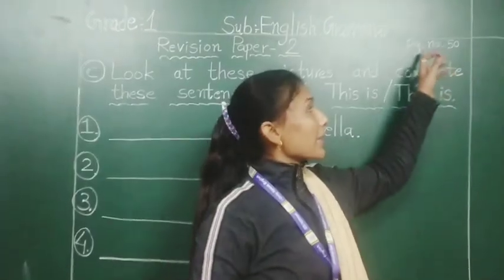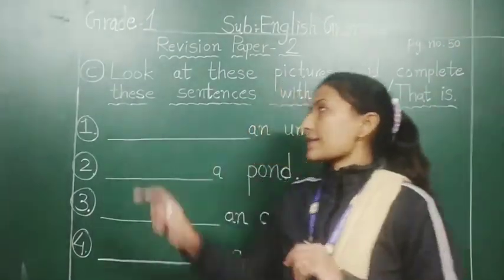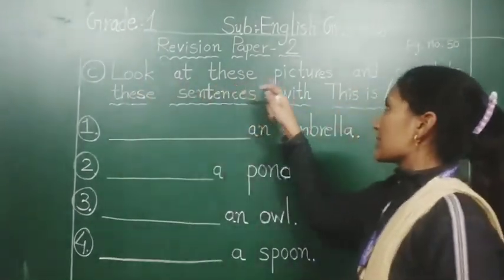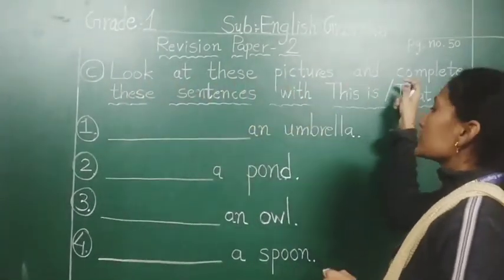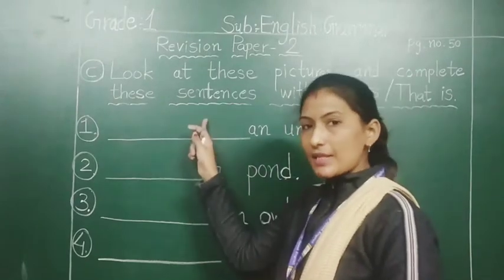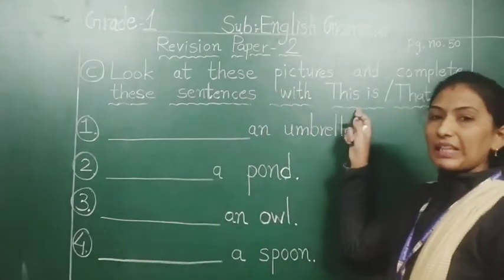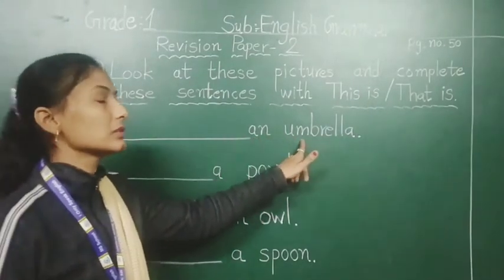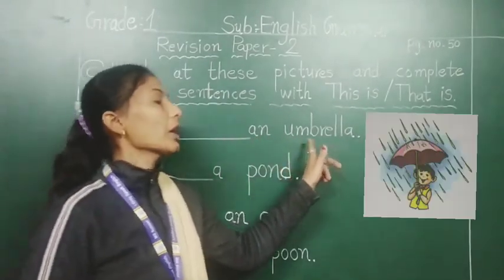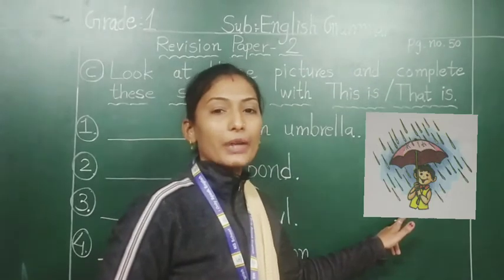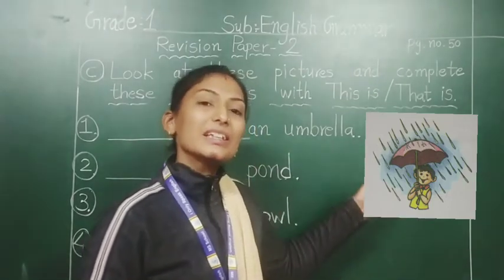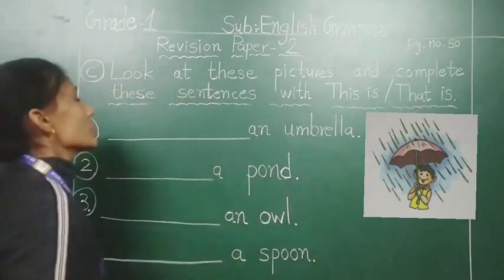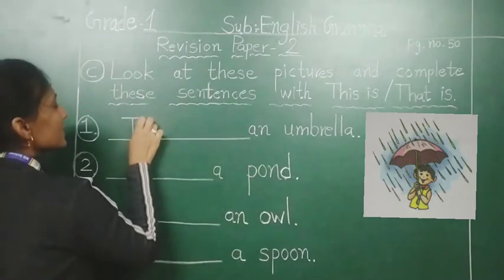Now, page number 50, exercise number C. Read with me: look at this picture and complete the sentences with 'This is' or 'That is.' See this picture — this is an umbrella, so we will write here: This is.